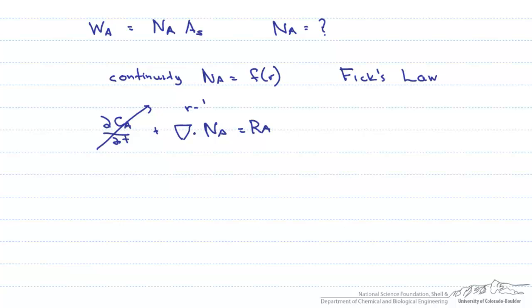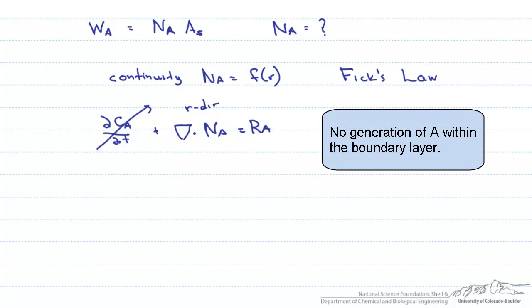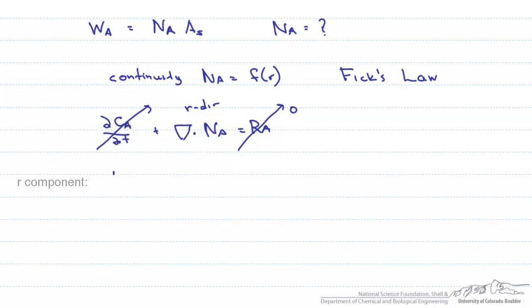It is only in the R direction, so we only use the R component of this directional part of the continuity equation. There is no accumulation term within the boundary layer. So what we are left with is 1 over R ddr times R N sub A equals 0.